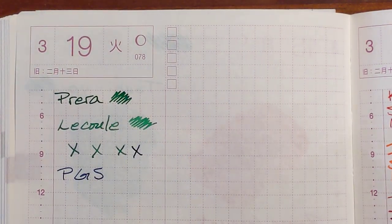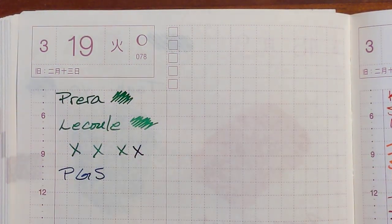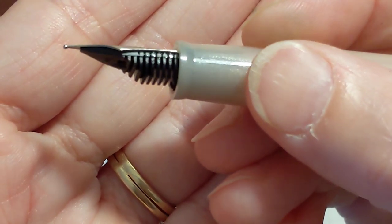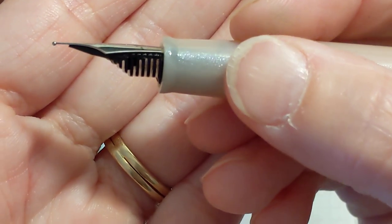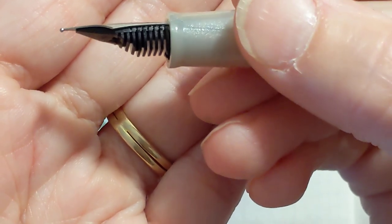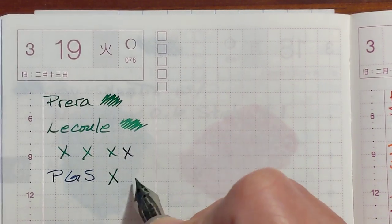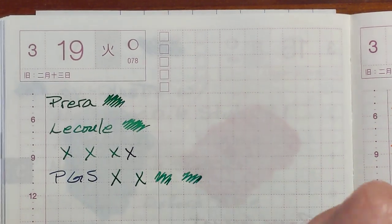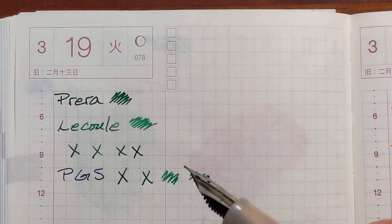Let me show you the nib on the Lacool. It's not round. It's not perfectly round like a Pilot nib is. Let me try holding it at a different angle. Yeah, there's just definitely some feedback there. I personally prefer the Pilot nib.